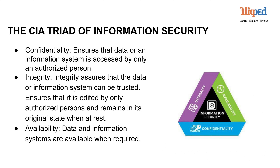The third pillar, availability, is all about accessibility. It's about ensuring that data and information systems are available and accessible whenever they're needed. Whether it's an individual seeking information or a system requiring data to function, availability plays a crucial role in maintaining operations.